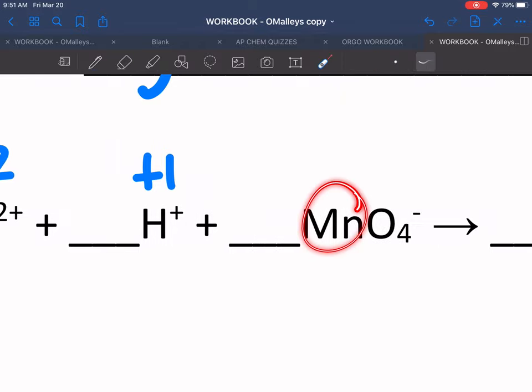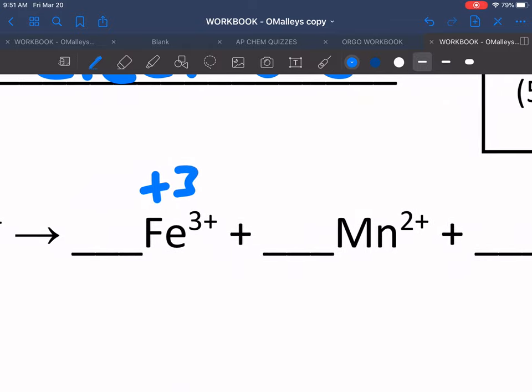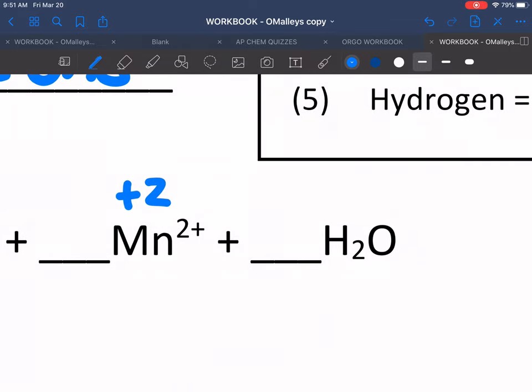MnO4 minus: I don't have a rule for manganese, so I'll do oxygen, which is mostly minus 2. There's four of them, so that's minus 8. The total has to be negative 1, which means the manganese is plus 7. In Fe3+ it's plus 3, Mn2+ it's plus 2, and in water the oxygen is minus 2 and the H is plus 1.